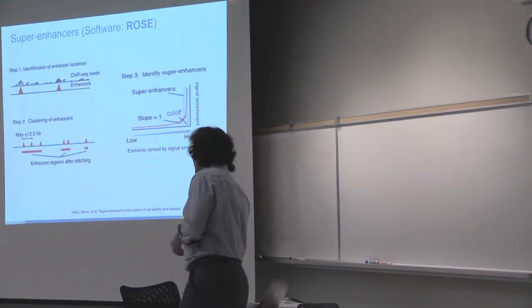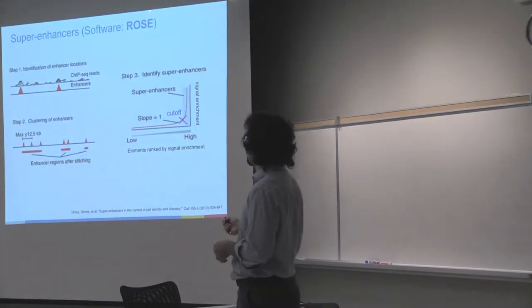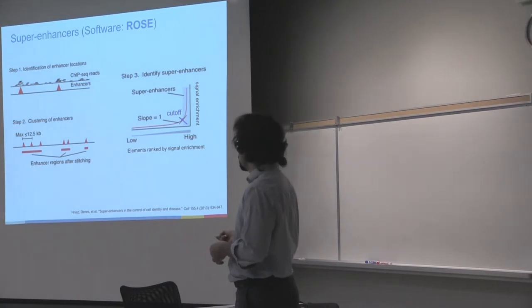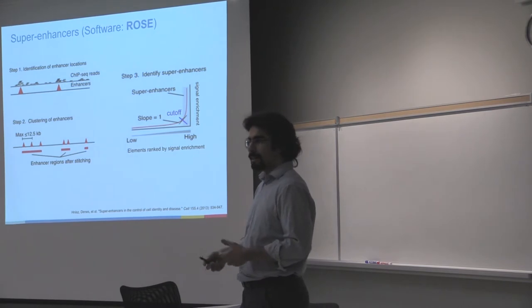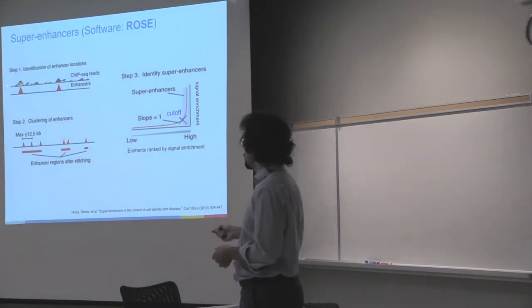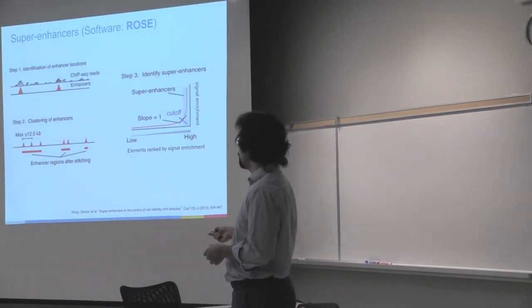If you look at the methodology, the methodology for ranking super-enhancers has two major steps. First, based on a ChIP-seq profile or chromatin accessibility profile, could be DNase hypersensitivity or ATAC, you identify cis-regulatory elements or single peaks. Then throughout the genome, you group the peaks considering a fixed threshold—that's very important—the fixed threshold of 12.5 kilobases.